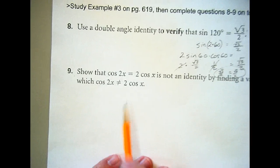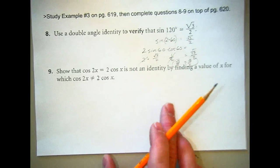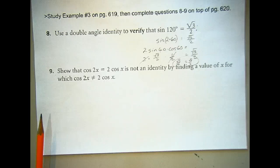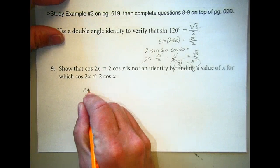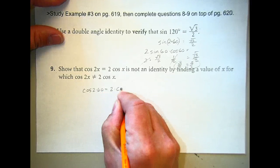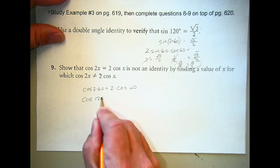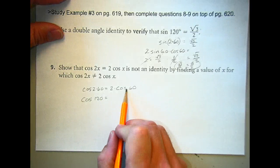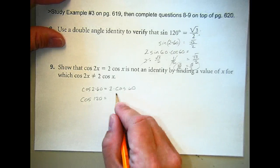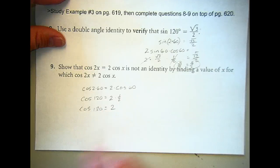Number nine. Show why cos 2x equals 2 cos x is not an identity by finding a value for x for which that is not true. Give me a value. Zach, what do you do? 60 degrees. 60. So you said cos of 2 times 60. You're trying to see if that's equal to 2 cos 60. And that's cos of 120. And 60 is? What's cos 60? 1 over 2. 1 over 2. Okay. So the question is, does cos 120 equal 2 times 1? Equal 1. Excuse me.